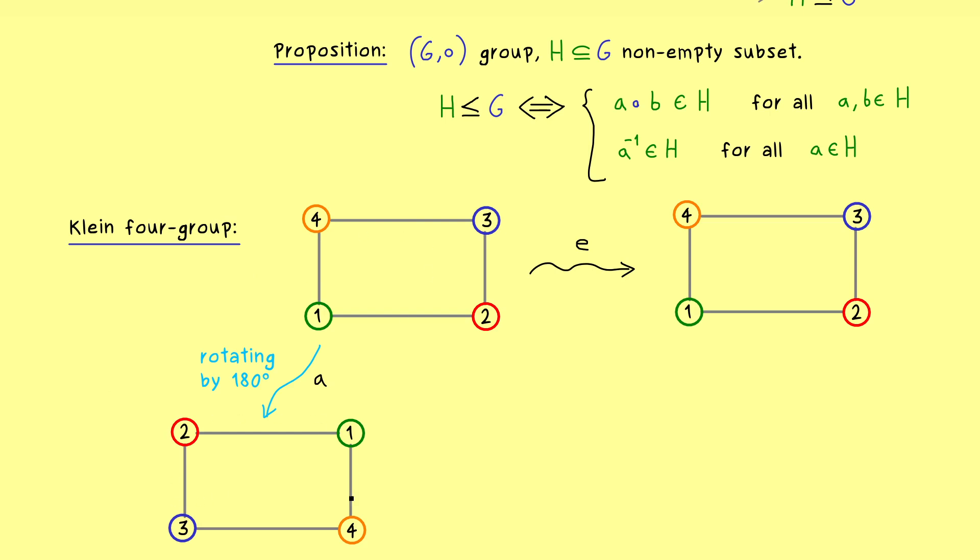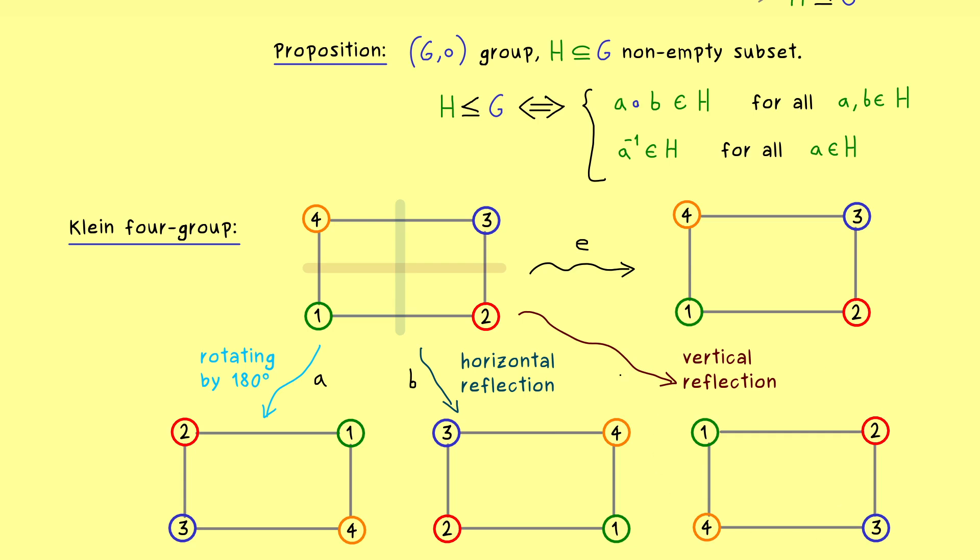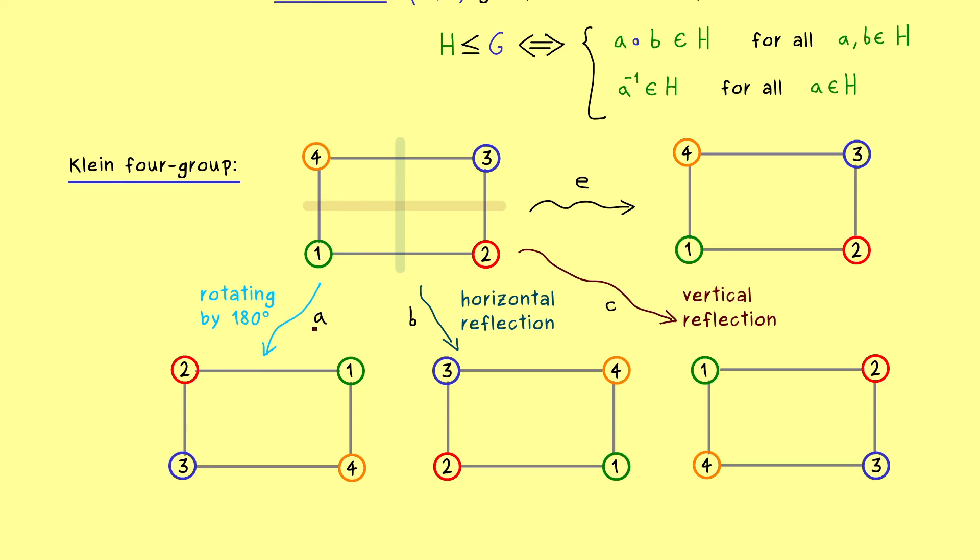So you see we get the same rectangle out, but the enumeration of the vertices changed. And obviously, this is exactly what we mean by a symmetry operation. On the other hand, we can do a horizontal reflection where we mirror the whole rectangle on this axis here. So there we have our element B, and this is the rectangle we get out. And now in addition, we can also do a vertical reflection. And there we will reflect with respect to this axis here. Hence the enumeration we get out is this one, and let's call our operation C. And that's it. These are all the symmetry operations we can do in such a rectangle which is not a square.